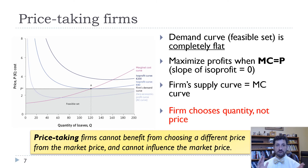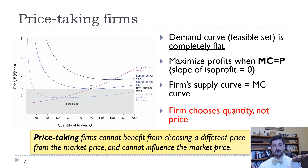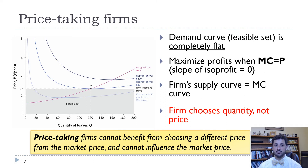Firms take that price as given. In perfect competition, they can't benefit from choosing a different price. If they increase their price from the market price, they won't sell any. And there's no point in reducing the price from the market price because they are already selling as much as they want at the market price. So their feasible set is below the market price, and they will set a quantity where marginal cost equals price — that's where they maximize profits.